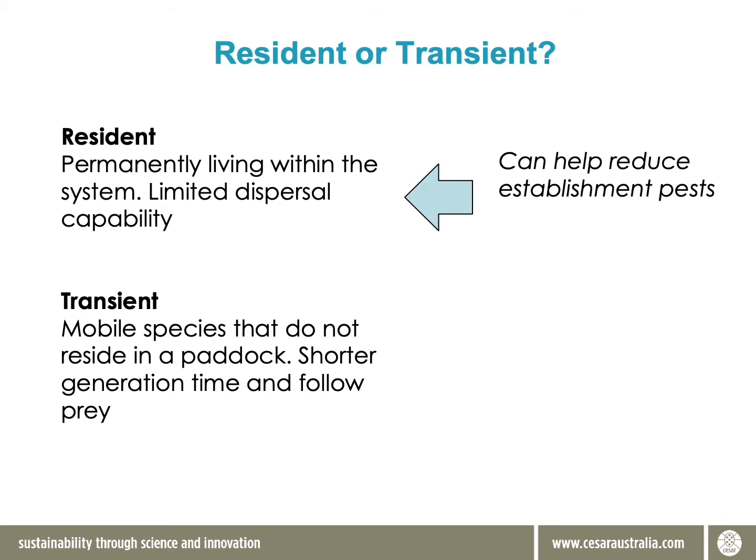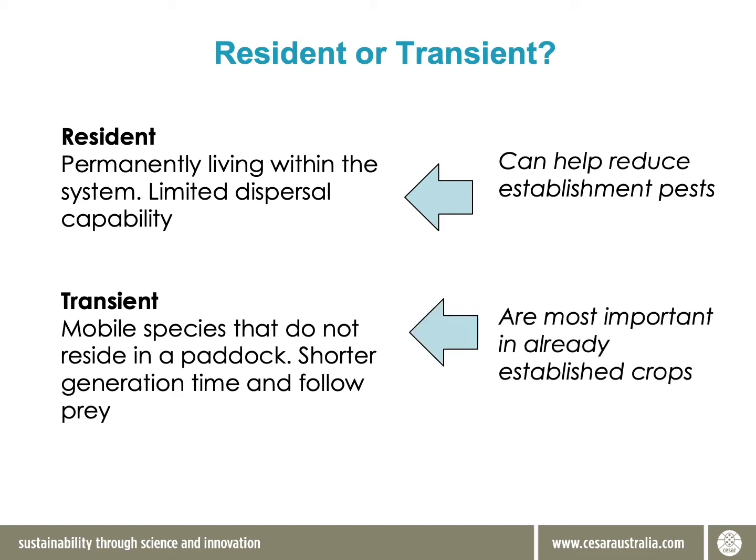Residents are largely confined to a crop or a paddock, whereas transients are much more mobile — they will move from paddock to paddock or property to property, and in some cases they can move quite large distances.